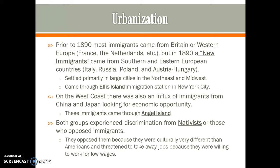On the West Coast, there was also a group of immigrants coming through — Asian immigrants from China and Japan, also looking for economic opportunity. They came through an immigration station called Angel Island. Both of these groups ended up experiencing discrimination from nativists — people who didn't like immigrants and opposed them coming into the United States. The Americans already there were mainly Protestant, while many of these new immigrants were Catholic and didn't share the same cultural values.